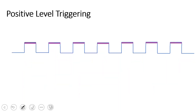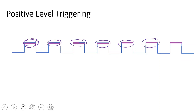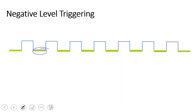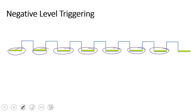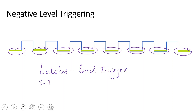Level triggering: positive level triggering means the flip-flop triggers during the clock pulse high duration — that is, while the clock is at a high level. Negative level triggering means the flip-flop output or state changes when the clock pulse is at the low level. Generally, latches use level triggering and flip-flops use edge triggering.